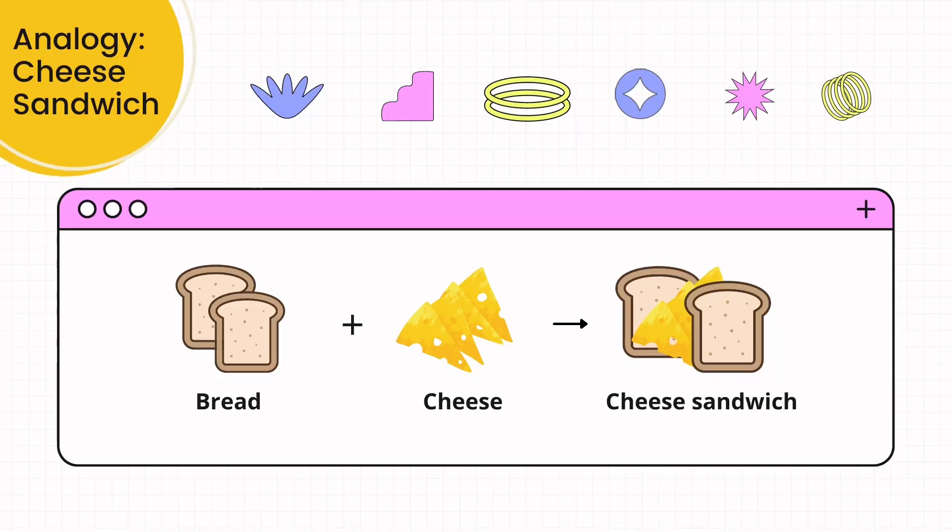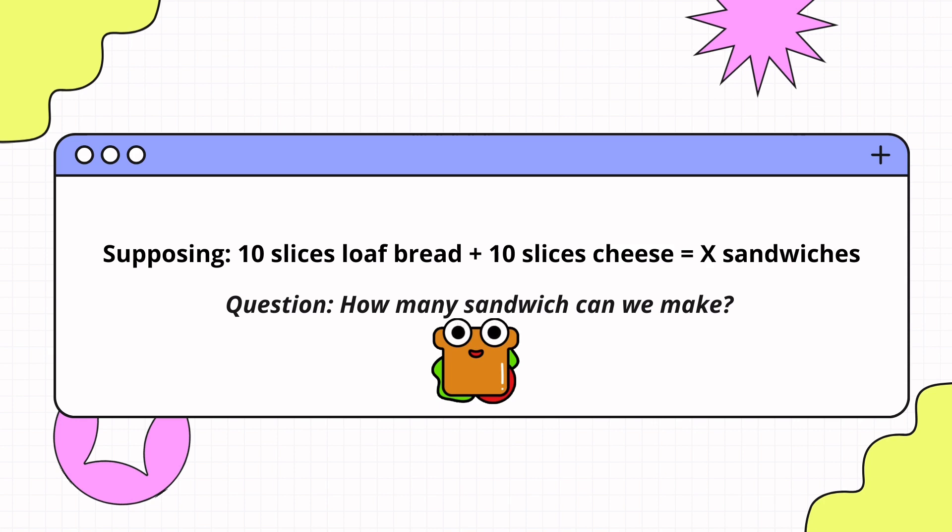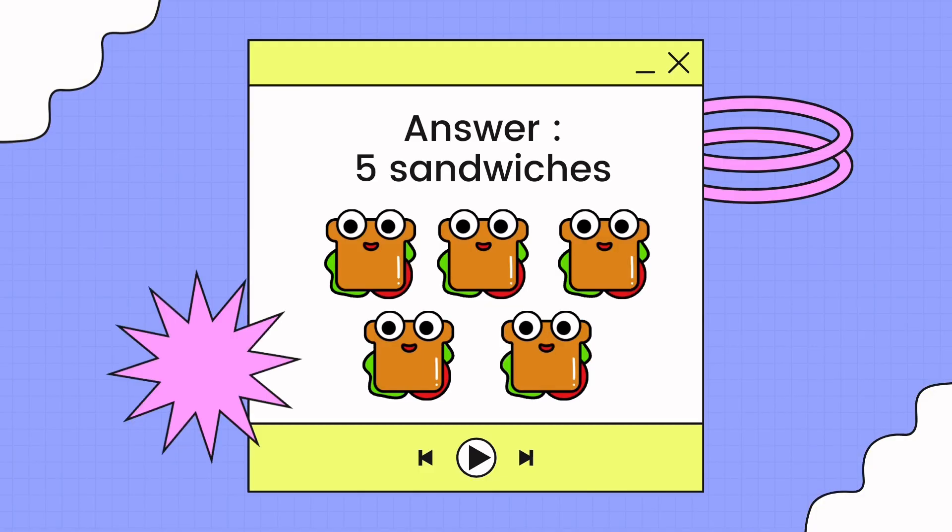For the next part, we will look into the cheese sandwich analogy. We have 2 loaves of bread plus a slice of cheese and we can make a cheese sandwich. Supposing we have 10 loaves of bread plus 10 slices of cheese, how many sandwiches can we make? The answer is 5 sandwiches.